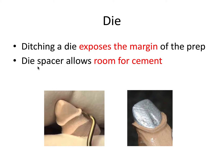The second process is painting on what's called die spacer to allow room for cement, shown in the bottom right picture. Die spacer is this thin, painted-on material that accounts for the cement layer. We want a thin film thickness of cement between the intaglio surface of the crown and the prepared tooth, and this creates that minuscule amount of space that we need.